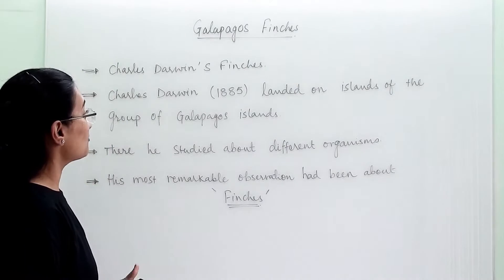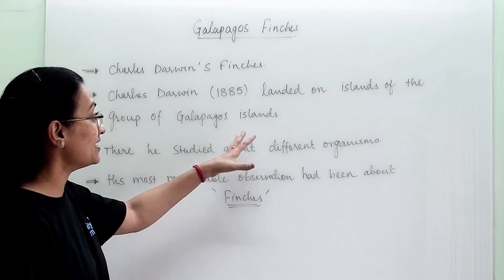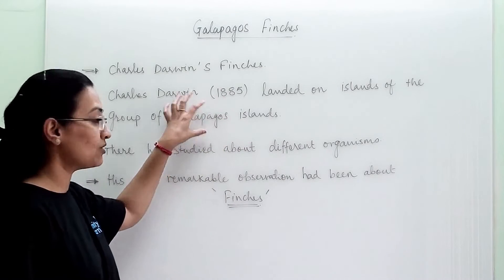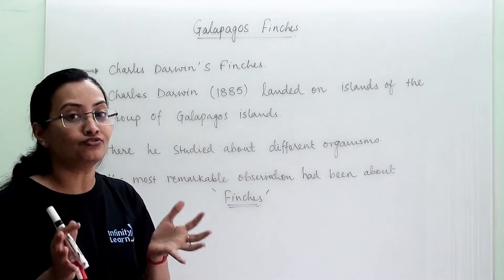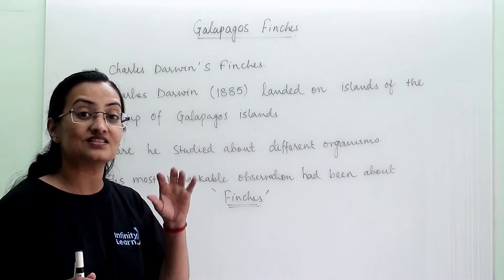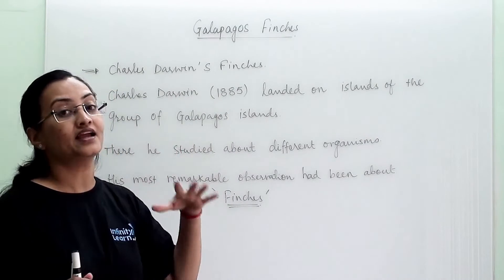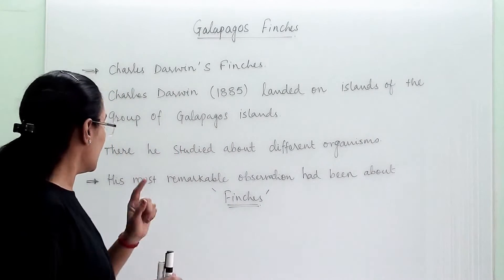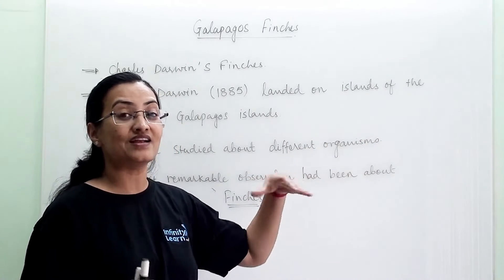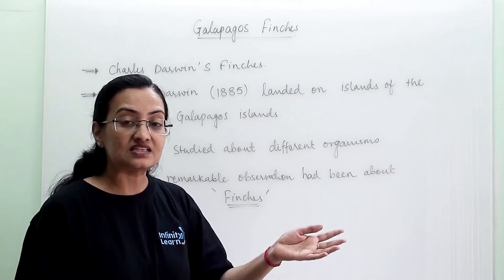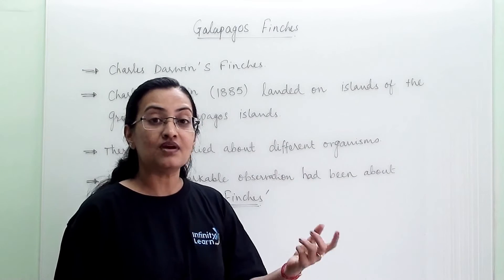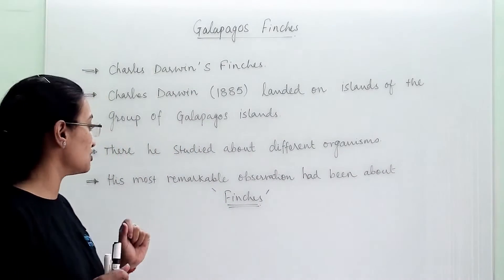Charles Darwin in 1885 landed on the group of Galapagos Islands. Galapagos is a group of islands where Charles Darwin, the scientist, landed in 1885. There he studied different organisms and animals who were present in this group of islands, and he marked some observations.